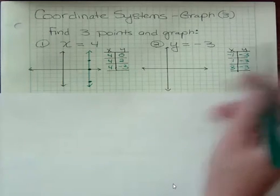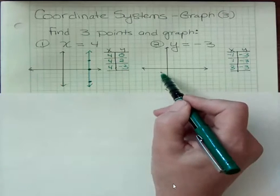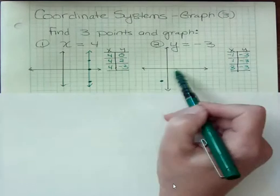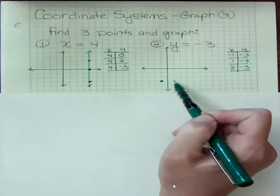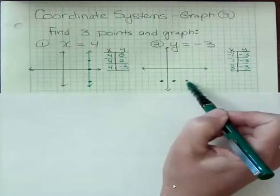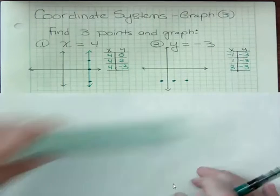So y is negative 3, but x is negative 1. x is negative 1, 1, 2, y is negative 3. x is 1, y is negative 3. x is 3, y is negative 3.